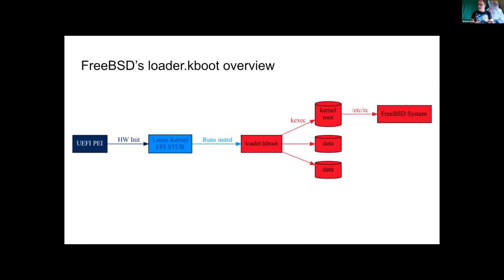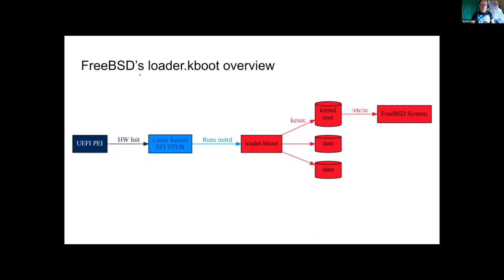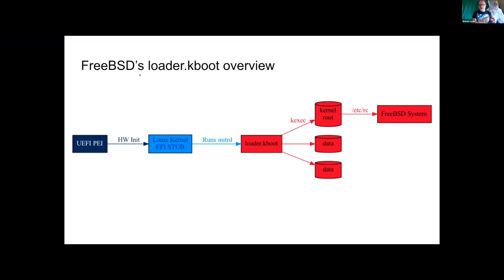Here's an overview of the rest of the talk, at least until I start talking about technical debt. We've got the UEFI init code that calls the Linux kernel, which has an initial RAM disk that runs its scripts. Eventually it will run loader.kboot, which looks at all the available disks and figures out which one should be root. Usually some additional metadata is needed inside the kboot environment. Once it kexecs to the kernel, it runs rc and you have a FreeBSD system running.